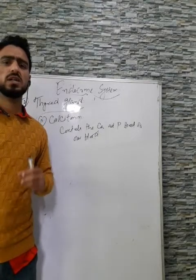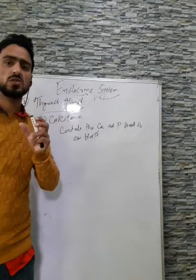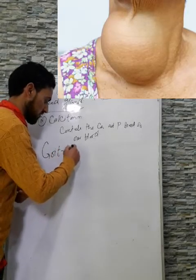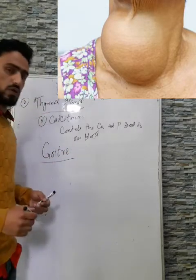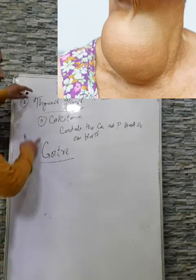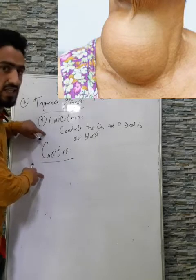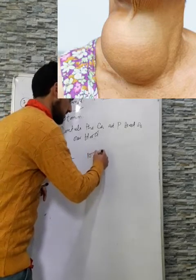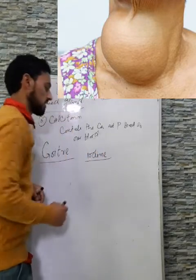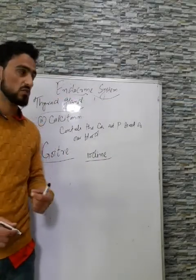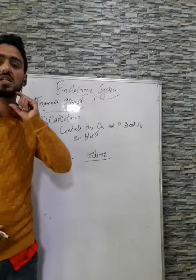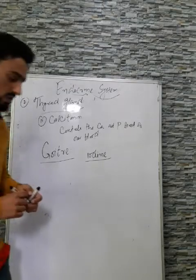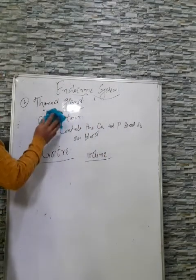One more disorder of the thyroid gland is goiter. As you can see on screen, the person suffering from goiter has an enlarged thyroid gland — caused by a deficiency of the dietary nutrient iodine. Due to iodine deficiency, the size of the thyroid gland increases, resulting in a swollen thyroid gland known as goiter.